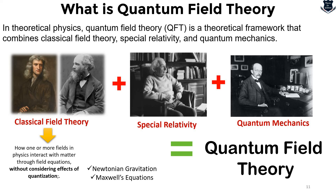You might think of Einstein's field equation — yes, that is one part. But Newtonian gravity and Maxwell's equations are also considered field equations on a classical level. This more or less defines quantum field theory as an emergence of classical field theory, special relativity, and quantum mechanics.